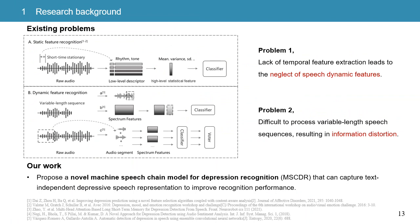To solve these problems, we propose a novel machine speech chain model for depression recognition, MSCDR, that can capture text-independent depressive speech representation to improve recognition performance.